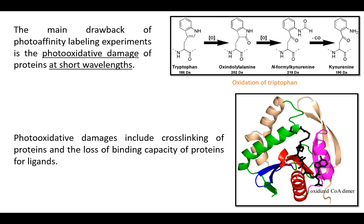One way of overcoming this problem is to pass a stream of water-saturated nitrogen or argon to remove dissolved oxygen in order to reduce the level of such photooxidative damage.